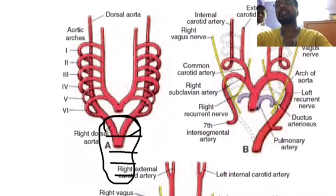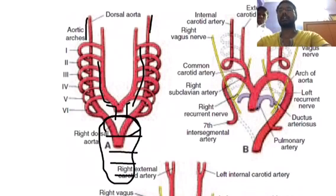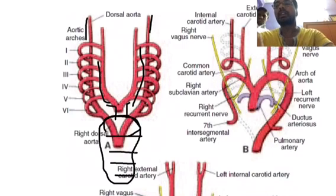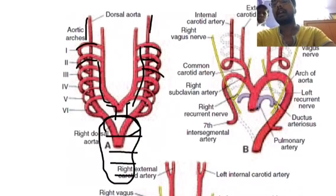From the heart tube, the aortic sac is formed. From the aortic sac, the aortic arch comes out and forms the two ventral structures. These two dorsal structures are called the dorsal aorta, which are formed on the dorsal aspect of the mesocardium. The structures connecting the ventral aortic sac and the dorsal aorta are called the aortic arches.